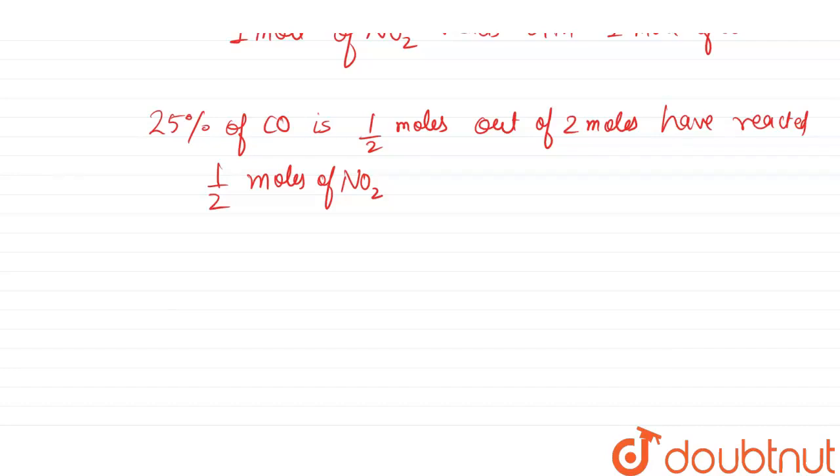Now from here we know the relationship between Kc and Kp. Because pressure is not given, we have to find it like this: Kp equals Kc times RT raised to the power Δn, and we know that Δn is...